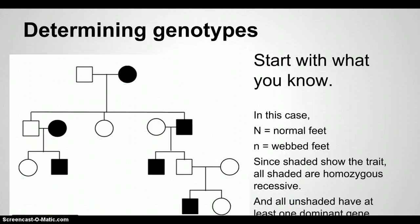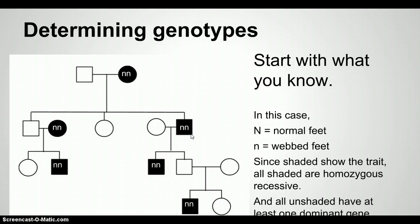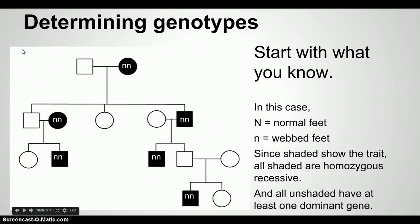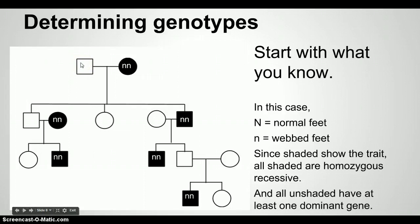Then comes the tricky part of determining genotypes. I tell the students that the trait shown in this tree is recessive. All the shaded individuals show the trait, so they are all homozygous recessive. This also means that all unshaded individuals have at least one copy of the dominant allele, since they do not show the trait.